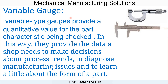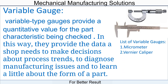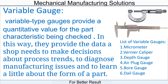By using these readings we can diagnose, analyze, and resolve the issues at the process and production line. The list of variable gauges includes: micrometer, vernier caliper, depth gauge, air plug gauge, bore gauge, and dial gauge.